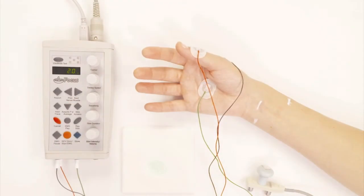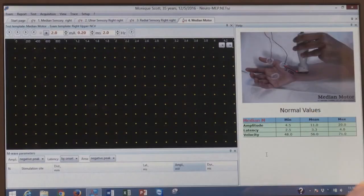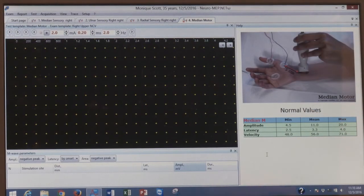The next nerve that we're going to do is the median motor. As I said, we press the next button, and here you see the picture of the median motor setup in which we stimulate the median nerve at the wrist.